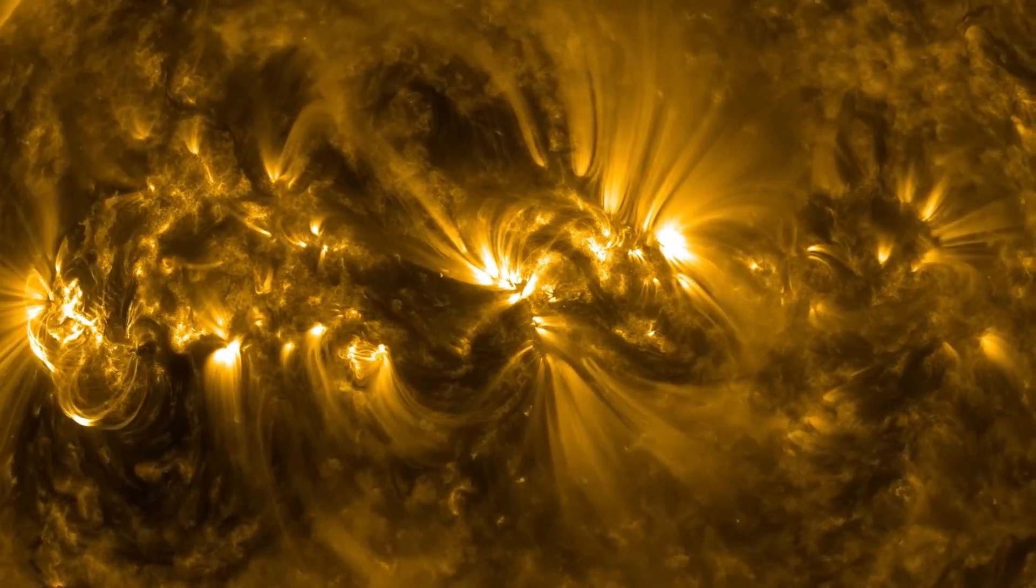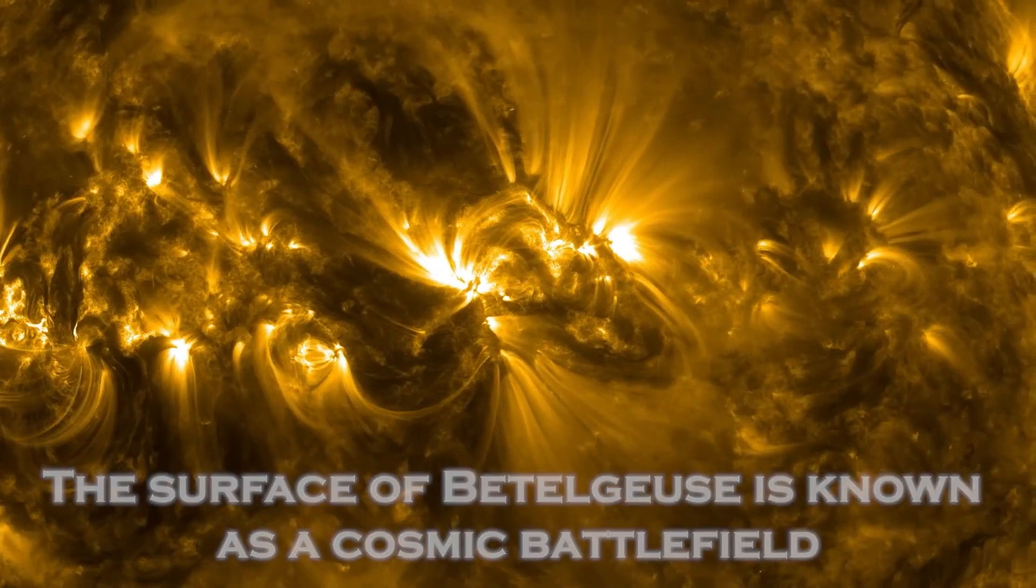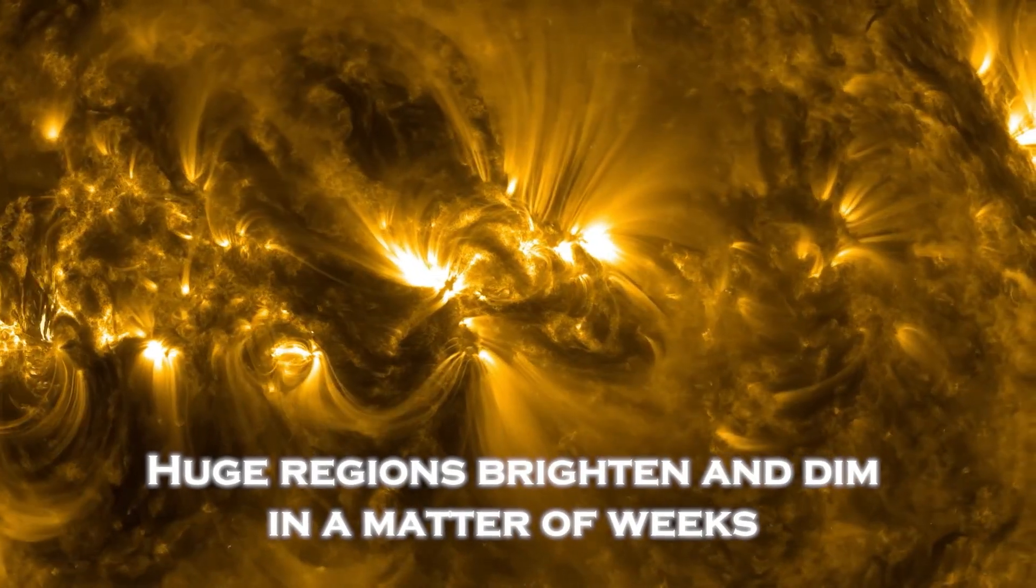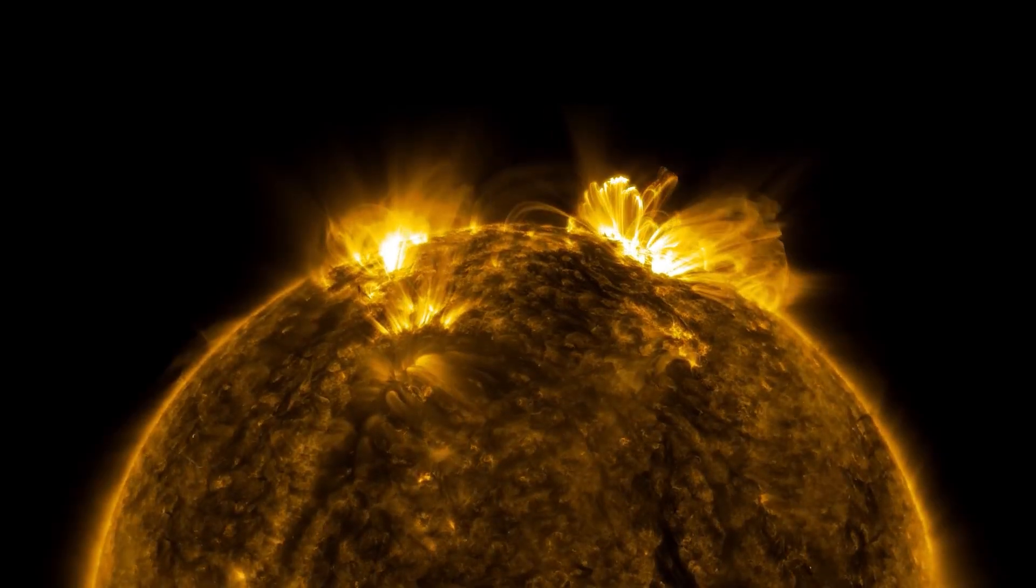With the James Webb image, the surface of Betelgeuse is known as a cosmic battlefield. Huge regions brighten and dim in a matter of weeks, which is unusual for a star of its size and age.